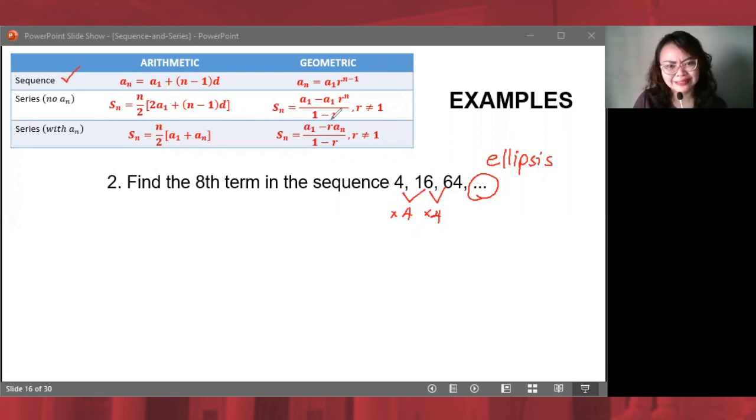Anyway, now that we know that it is a geometric sequence, let's solve for the eighth term. Geometric sequence, that means the formula that we will use is this one. Now, let's do this, ladies and gentlemen. We have a sub n is equal to a sub 1 times r raised to n minus 1.